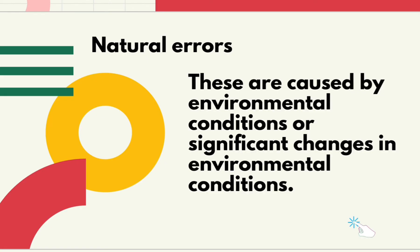Natural errors are caused by environmental conditions or significant changes in environmental conditions. Wind speed, air temperature, atmospheric pressure, humidity, gravity, earth curvature, and atmospheric refraction are examples of natural error sources. Many of these environmental conditions can be compensated for by applying a correction factor to each measurement. Commonly used correction factors are the parts per million (PPM) and curvature and refraction constants.